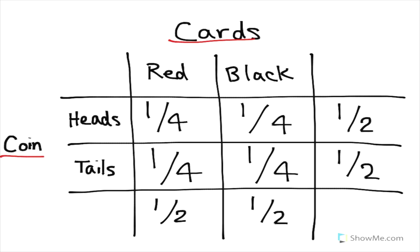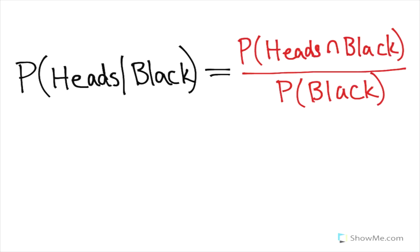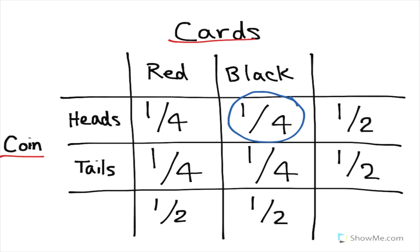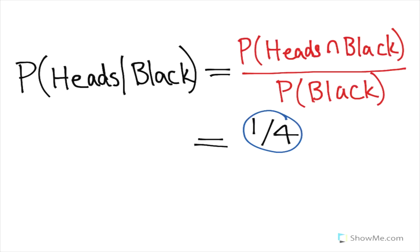If we go back to our table, the probability of flipping a coin and landing on heads and drawing a black card is one-fourth. So that's on top. Then the probability of just drawing a black card from the deck is one-half. So that's on bottom. One-fourth divided by one-half is one-half. That's our conditional probability of landing on heads given that we drew a black card.